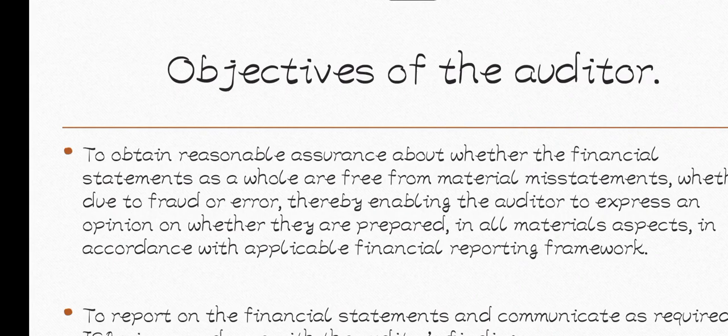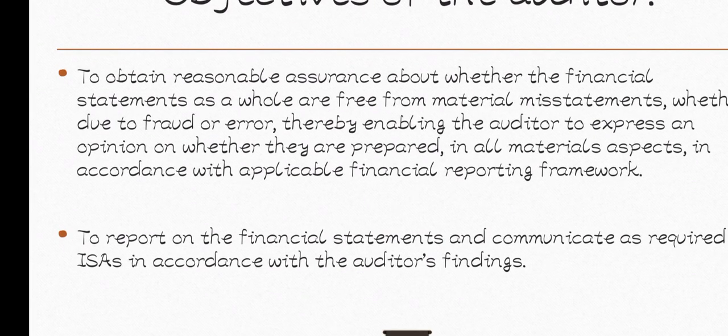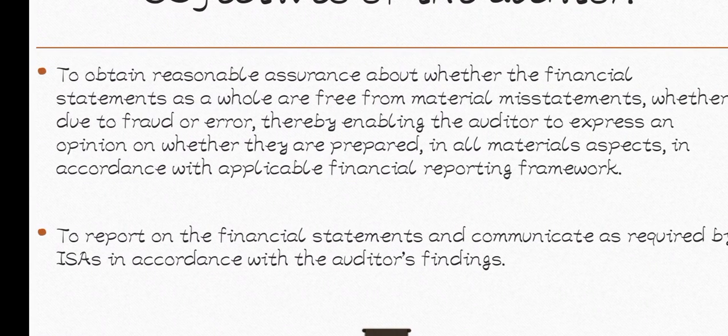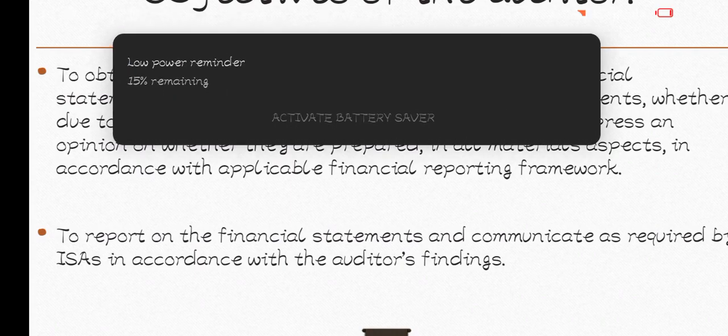The second objective is to report on financial statements and communicate as required by the ISA — International Standards on Auditing — in accordance with the auditor's findings. So after the auditor obtains reasonable assurance, the auditor has to give what we call the audit report, reporting on those financial statements and communicating as required according to the ISA.